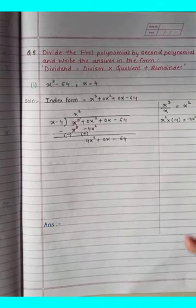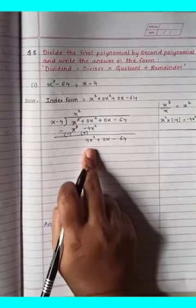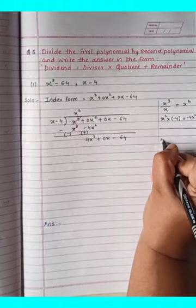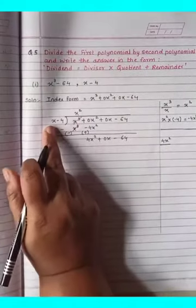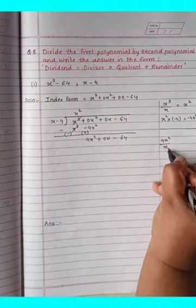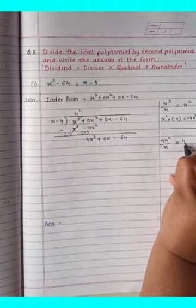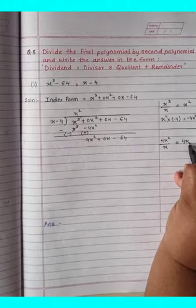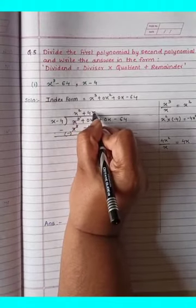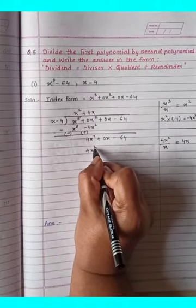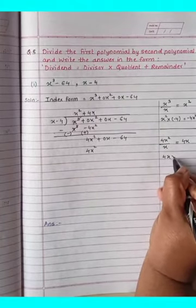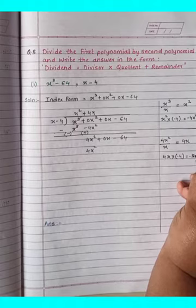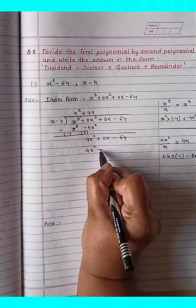First step is over. In the second step, the first term is 4x². We divide this by x, the first term of the divisor. The number stays the same; subtracting powers gives 2 minus 1 = 1, so we get 4x. We write 4x in the quotient. The 4x² term comes down as it is, then we multiply 4x by minus 4 to get minus 16x.